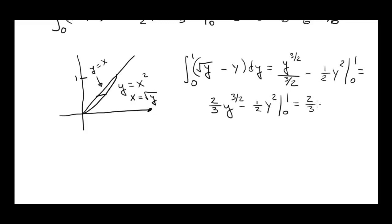And this is 2 thirds minus 1 half. Now 2 thirds is 4 over 6. 1 half is 3 over 6. And the answer still is 1 over 6.